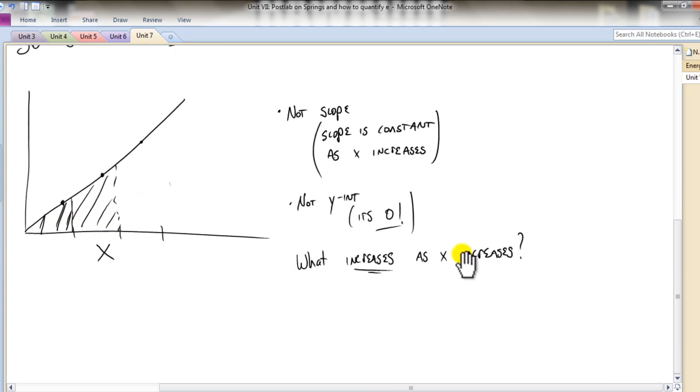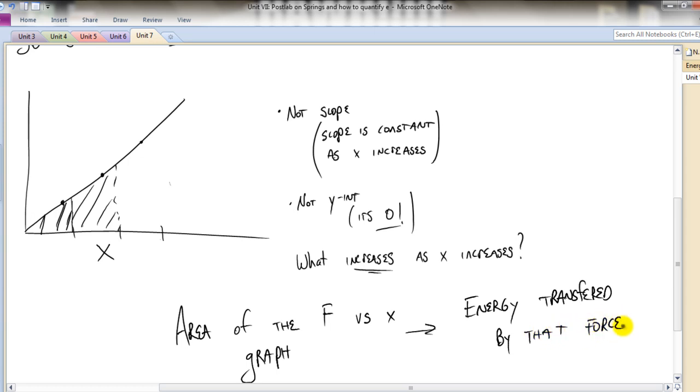So what you'll start to notice is the area of the F versus x graph is the energy transferred by that force. So this is a really key idea because this allows us to say any force can transfer energy. So it's basically looking at a force across a distance, which allows us to say energy is being transferred.